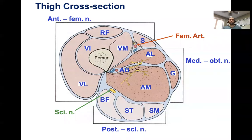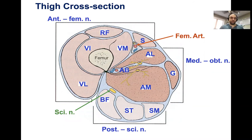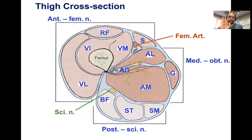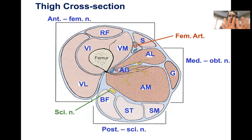But here's the tricky part: if we flip to the inferior view — imagine you're on the floor looking up at the thigh — we'd actually be looking at the right thigh. When you look at a cross-sectional image, it really depends on whether you're looking at the inferior or superior view. We almost always assume superior, but it was a trick question because it actually depends on your perspective.